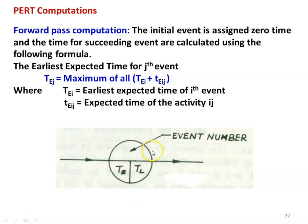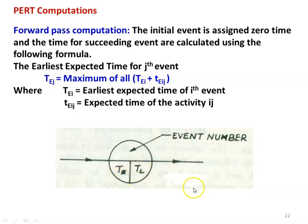For any event, there will be a circle representing the event. We have to divide the circle into three parts: this is the incoming activity, this is the outgoing activity. At the top of the circle, we write the event number — normally 1, 2, 3 up to the end. The bottom portion is divided into two: the left side is for the TE value, earliest expected time, and the right side for the TL value, latest allowable time. In the forward pass computation, we calculate the earliest expected time; in the backward pass computation, we calculate the TL value.